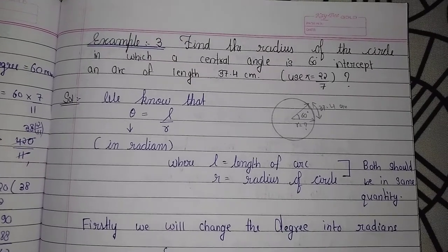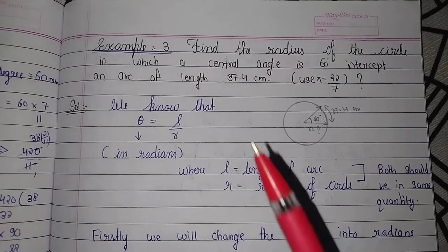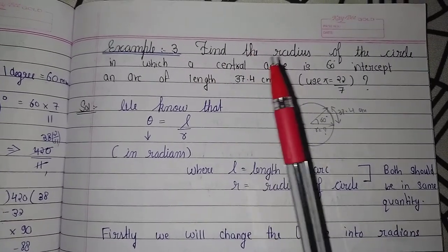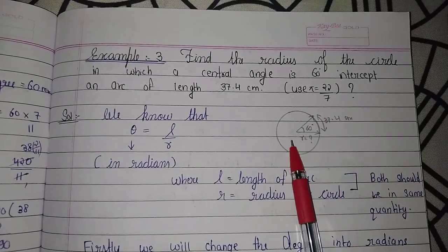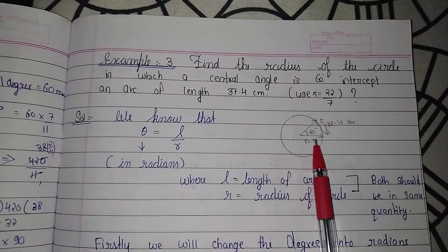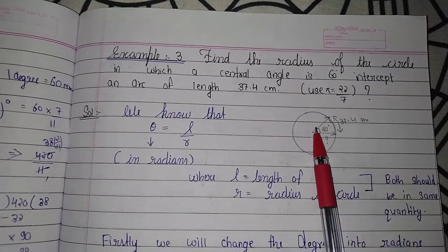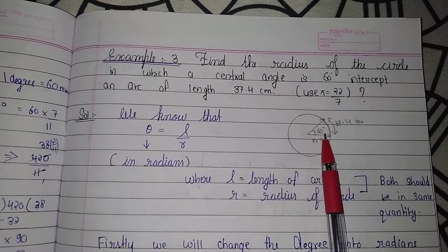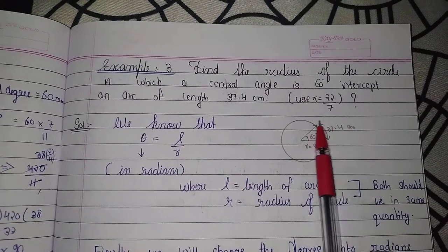Now, example number 3 of chapter 3, trigonometry functions, class 11th. Find the radius of the circle in which the central angle is 60 degrees and the arc length is 37.4 cm.